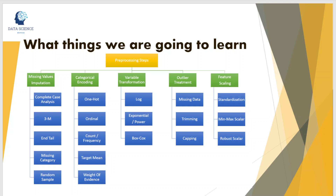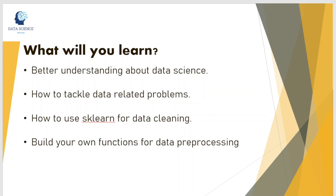Next we will move to categorical encoding, which is converting string or categorical data into numerical format, because machine learning algorithms cannot understand qualitative data — it needs to be converted into numerical format. I will talk in depth about each technique in a dedicated video. As of now we'll have a brief overview of everything. I currently have 19 techniques in mind, and I'll keep adding more as we proceed.